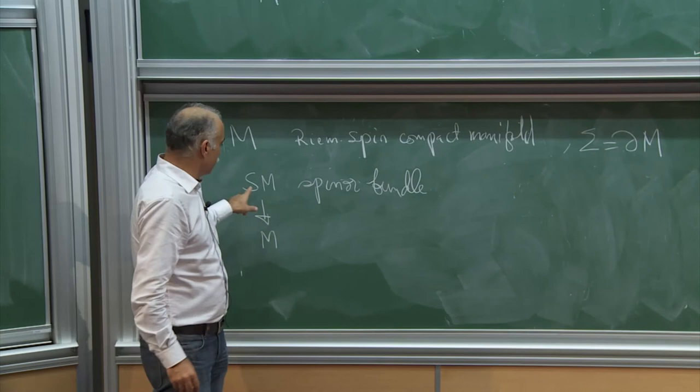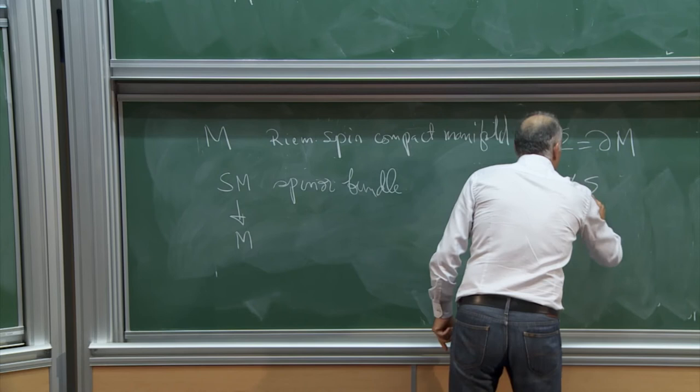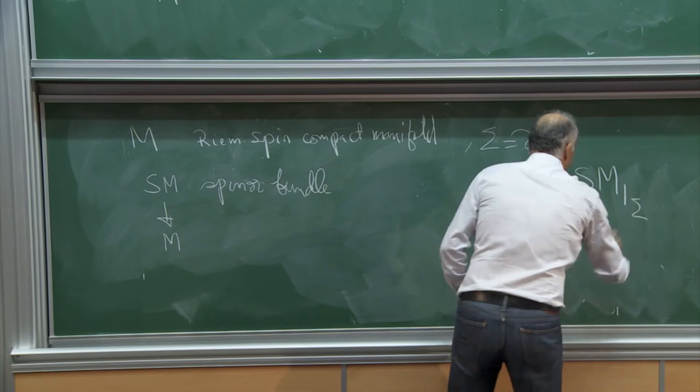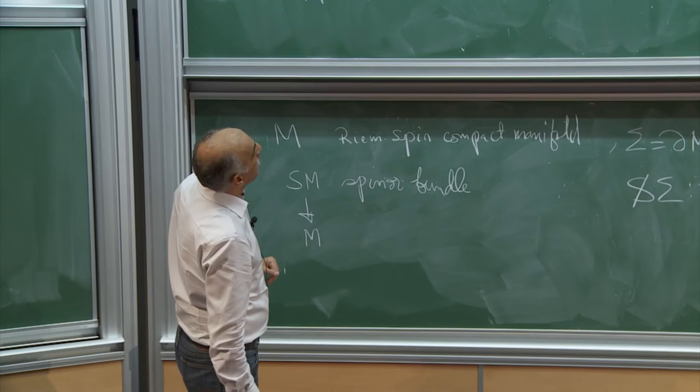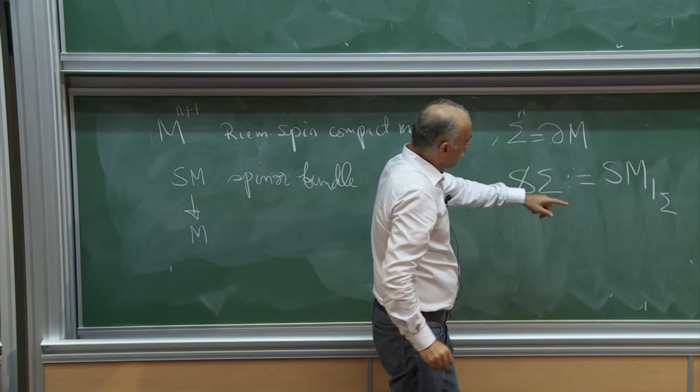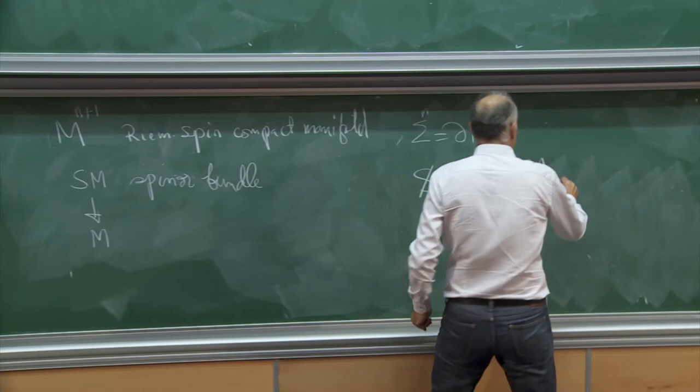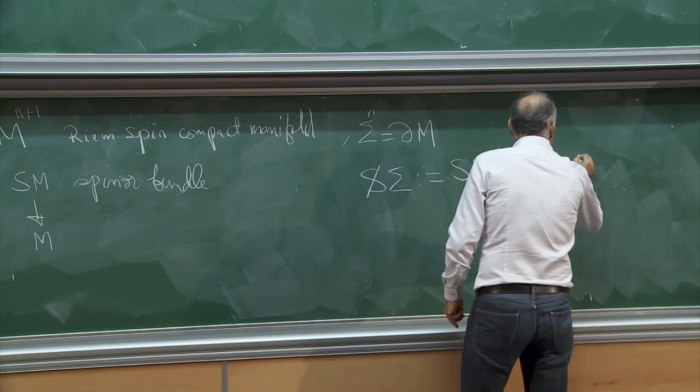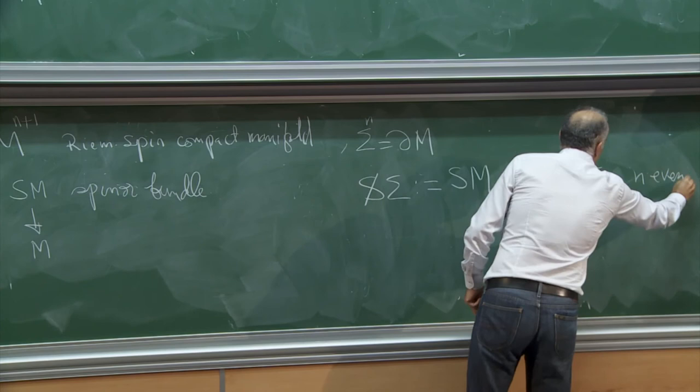So then we have to look at the restriction of this spinor bundle to sigma. So I define S slash sigma to be the restriction of this ambient spinor bundle to sigma. So in fact, here, I should assume maybe take M to be n plus one dimensional. Because sigma is n-dimensional and this extrinsic spinor bundle of the hypersurface of the boundary is isomorphic to the intrinsic spinor bundle of sigma if n is even. So let us stick to this case.